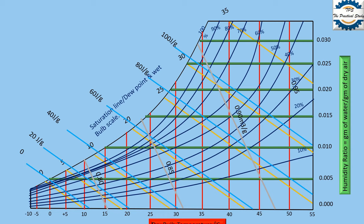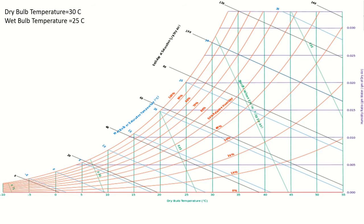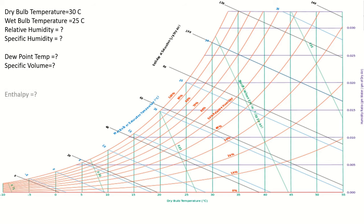Now it's time to solve a practical example of how to calculate required parameters on the psychrometric chart using a professional chart to get correct values. To use the psychrometric chart, you must have two known parameters. Given: dry bulb temperature is 30°C and wet bulb temperature is 25°C. We need to find relative humidity, specific humidity, dew point temperature, specific volume, and enthalpy.